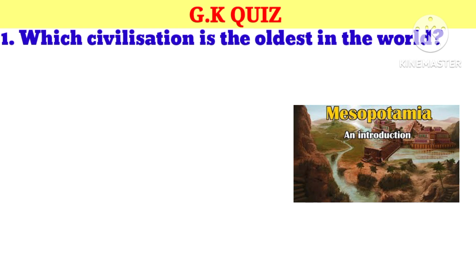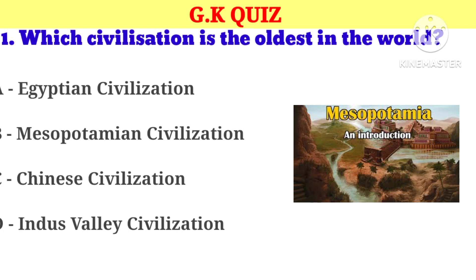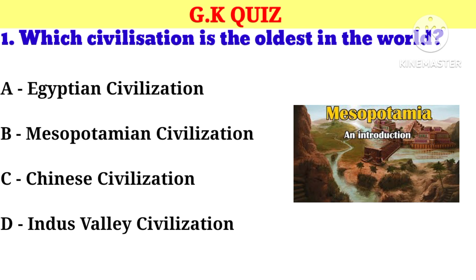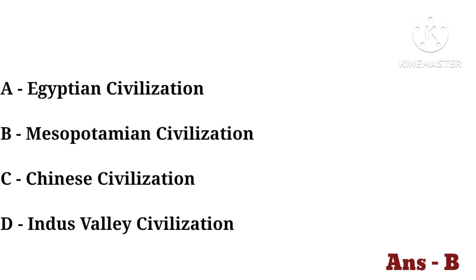Question number 1. Which civilization is the oldest in the world? Your options: A. Egyptian civilization, B. Mesopotamian civilization, C. Chinese civilization, D. Indus Valley civilization. And now your correct answer is B. Mesopotamian civilization.